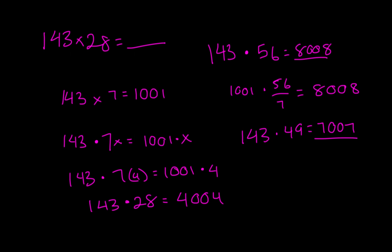So it's a rather simple trick. If you see that it's a multiple of 7 times 143, you can just divide that multiple of 7 by 7 and multiply that times 1001.